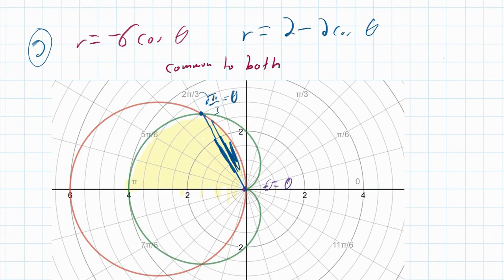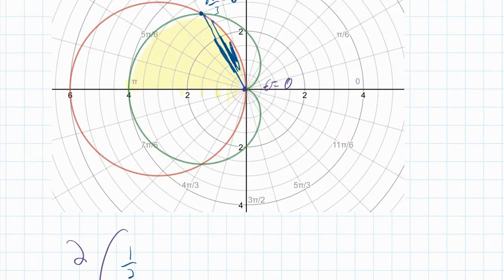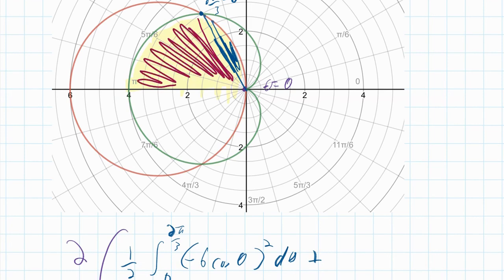So this curve, we're only going to do the area of the red one: one half integral from zero to two pi over three of the red curve, which is negative six cosine of theta quantity squared, d theta. Then we're going to add, let's do another sweepage. That's just going to be the green curve now for the rest of it. So we're going to add one half integral from two pi over three to pi of the two minus two cosine of theta squared, d theta.